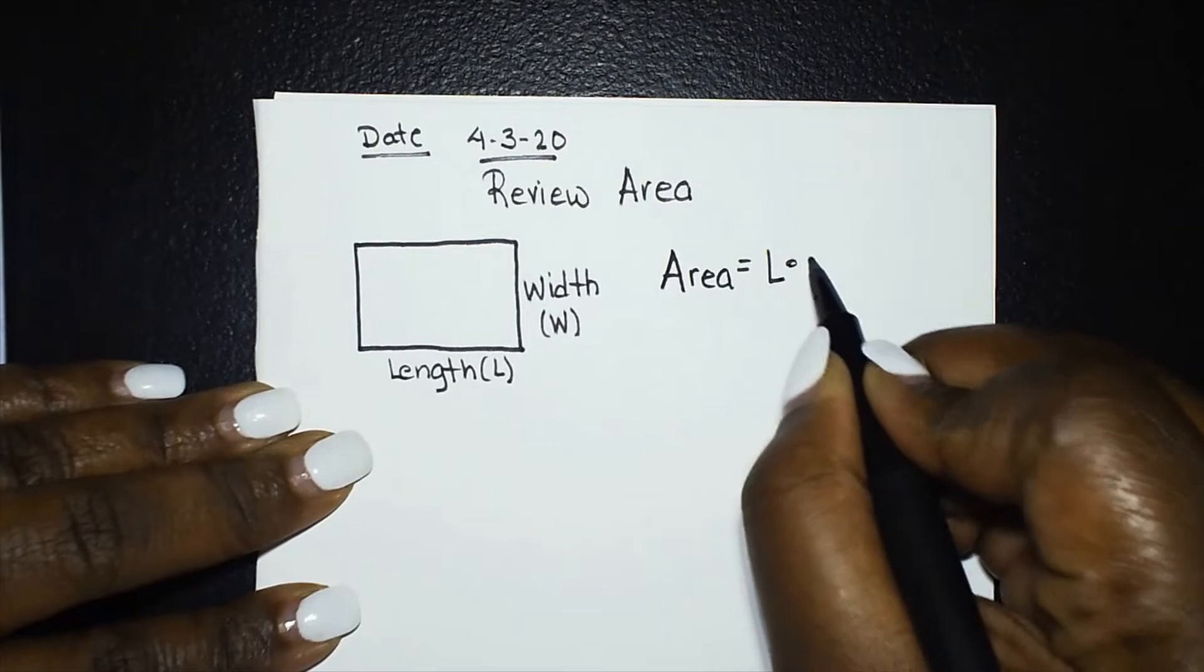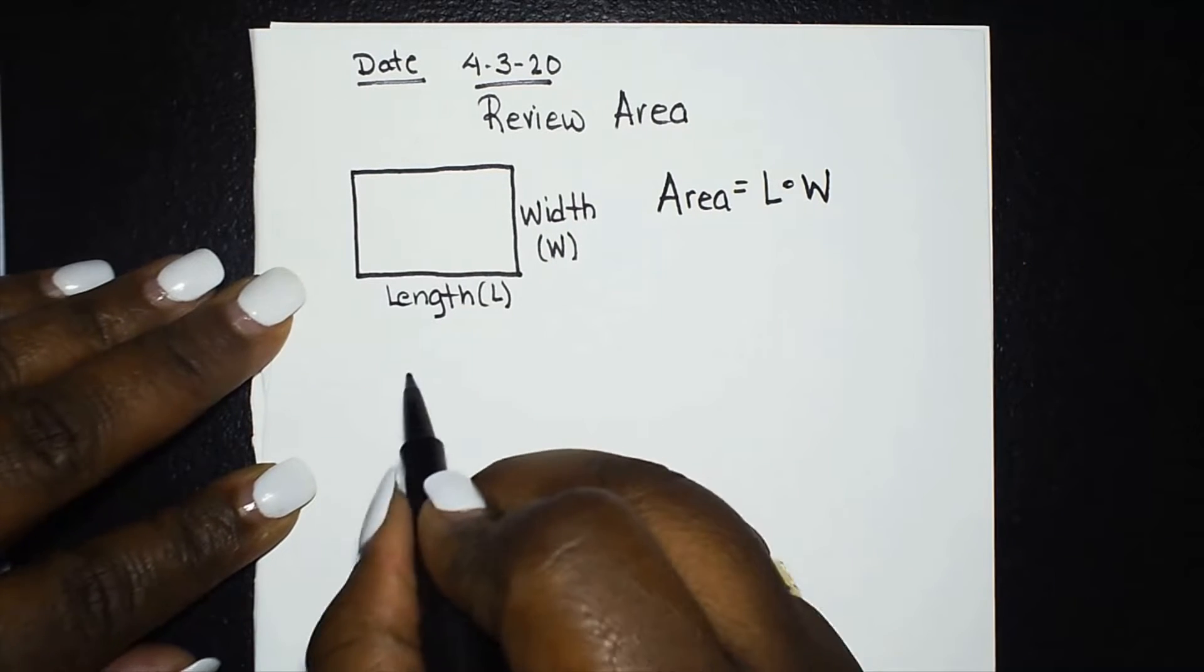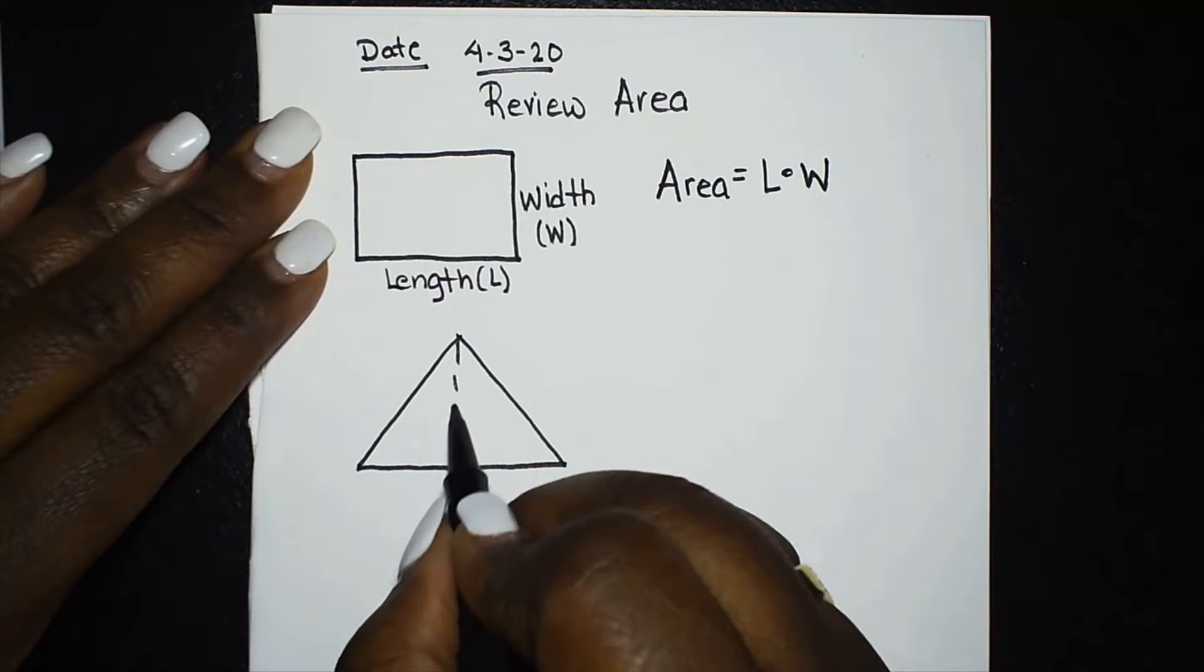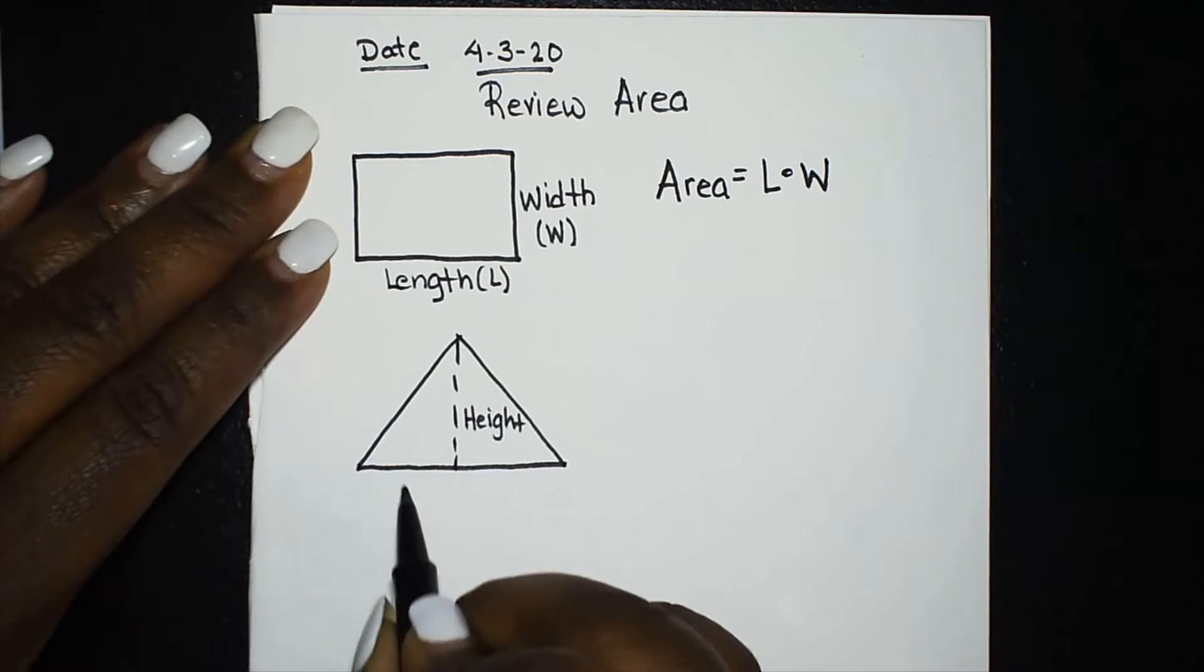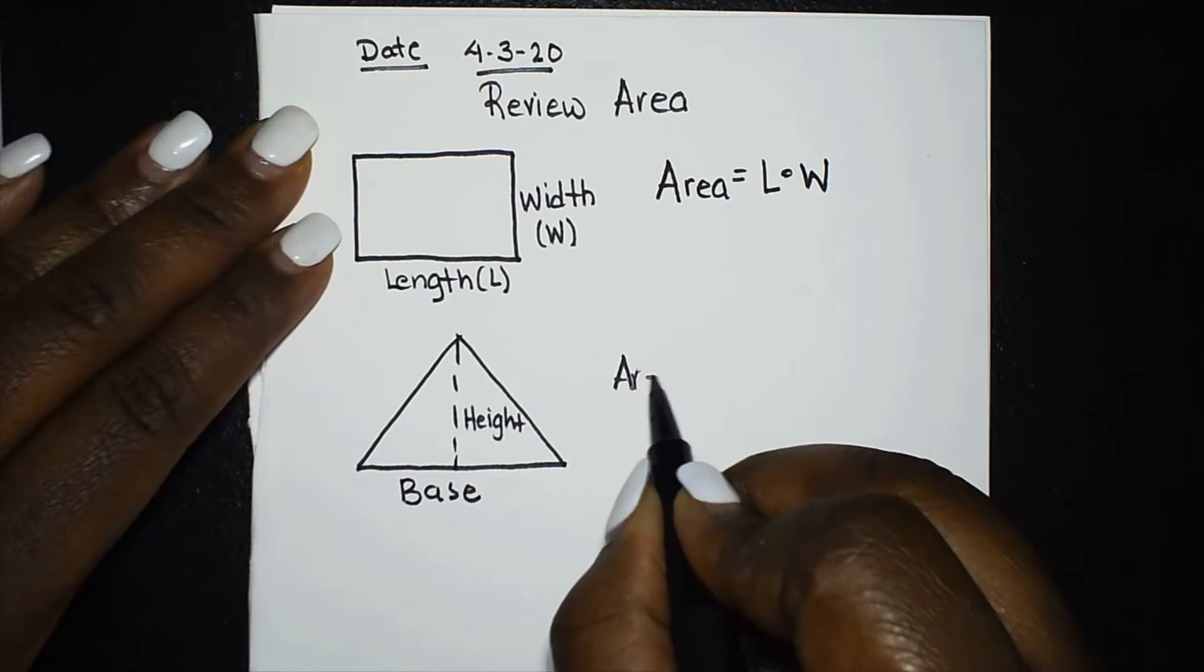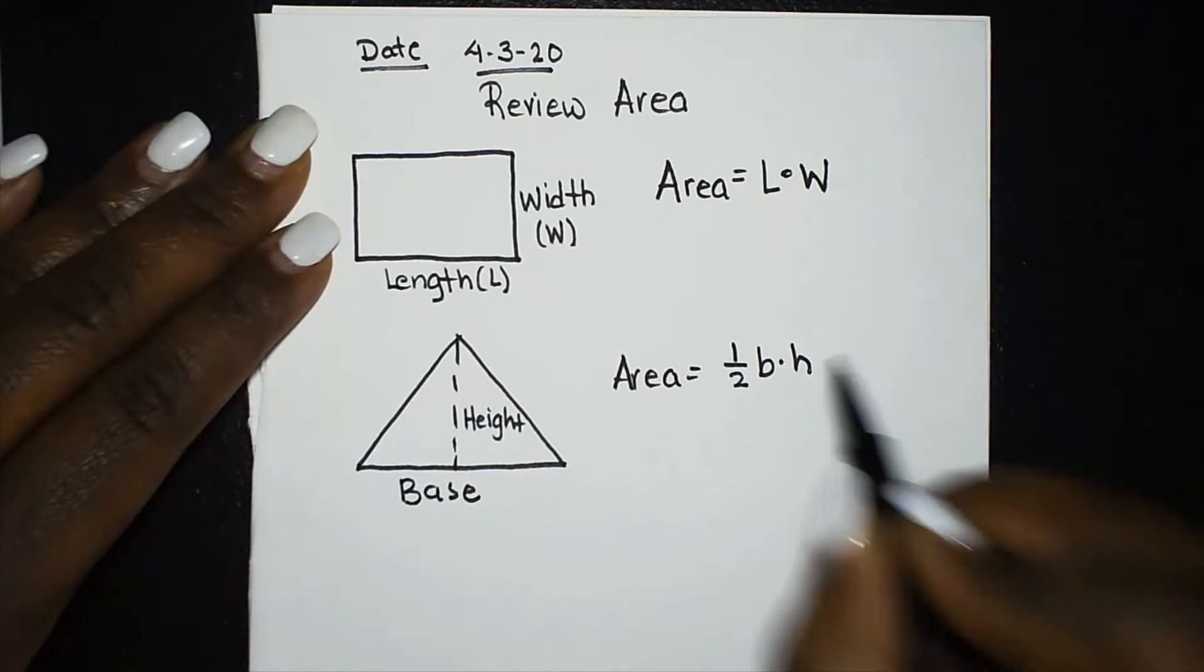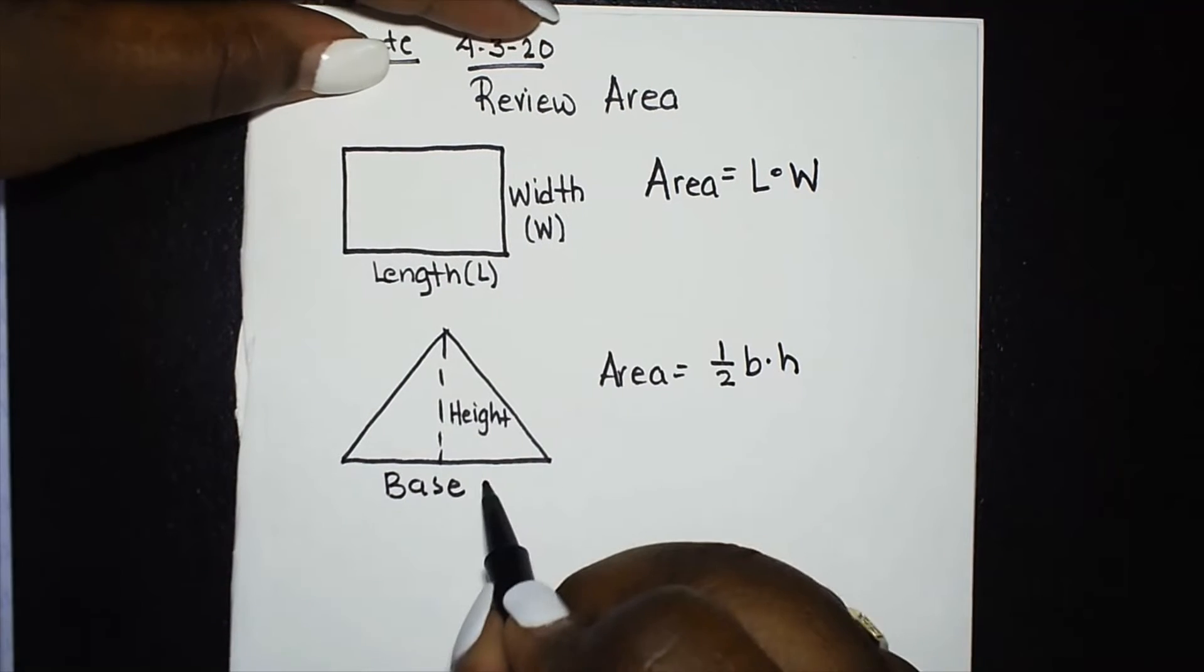Our next common shape is a triangle. Now the triangle you have a height and you have a base. The area of the triangle is one half base times the height and so when we see the base we have base here and H for height so that's your letters there.